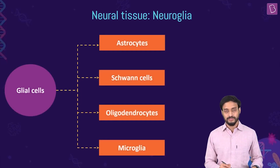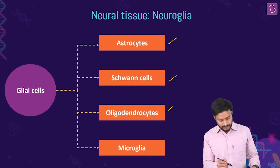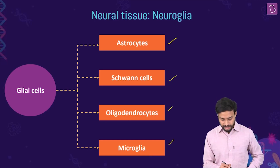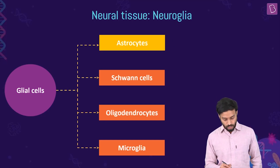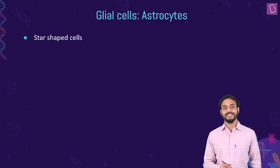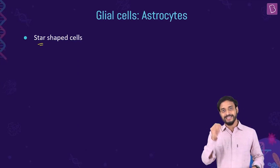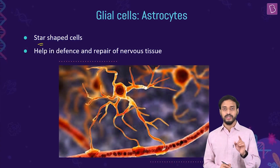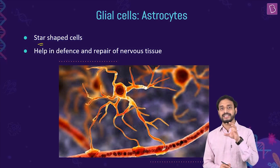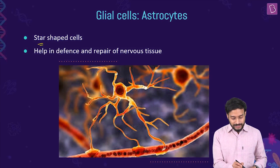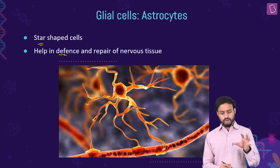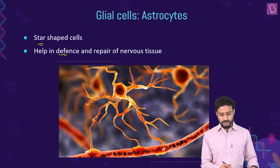The types of neuroglia include astrocytes, Schwann cells, oligodendrocytes, and microglia. Astrocytes are star-shaped cells — 'astro' refers to stars. They help in defense and repair of the nervous tissues and provide mechanical support to the neurons.